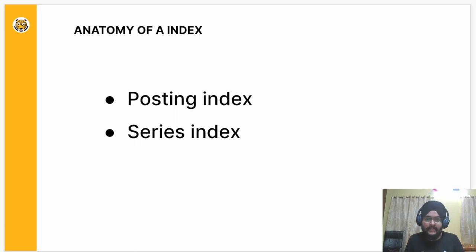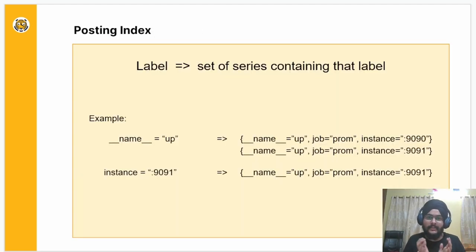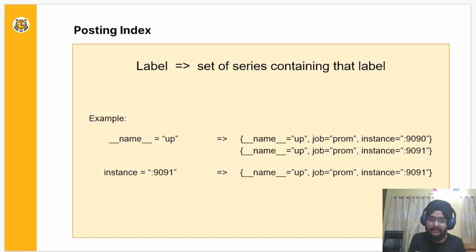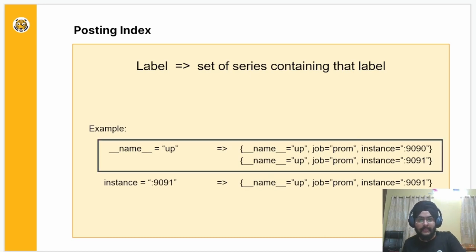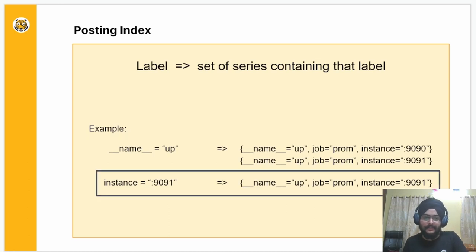Now let's see what an index file is. The Prometheus index file contains two types of indexing. The first is the postings index and the second is the series index. A postings index is a relationship between labels and a set of series that contains that particular label. For example, name equals up — this label is contained in two series. Similarly, instance equals 9091 has one series in our example which contains this particular label.